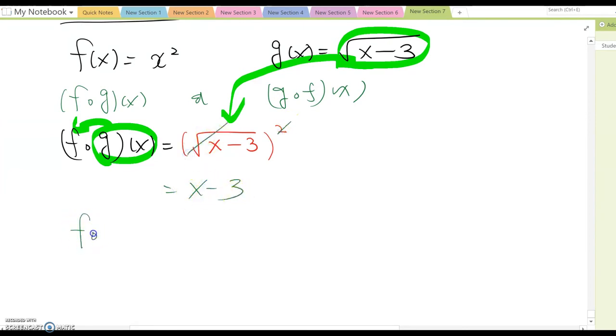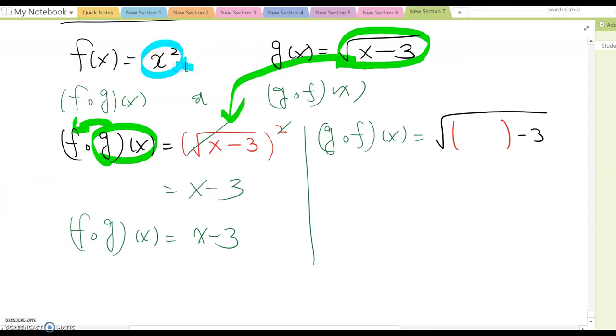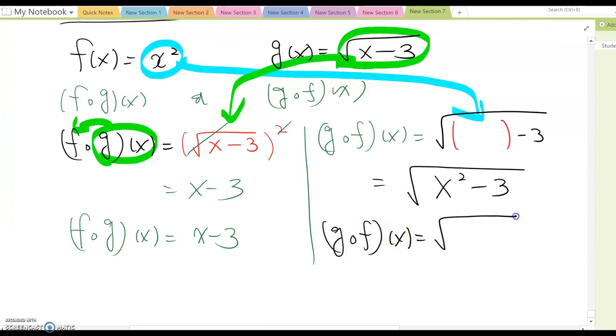Therefore f open dot g(x) equal to x minus 3. Now g open dot f(x). It will be formed as square root something minus 3. And then you are plugging this x square into here. Then this becomes square root x square minus 3. Therefore g open dot f(x) equal to square root x square minus 3.